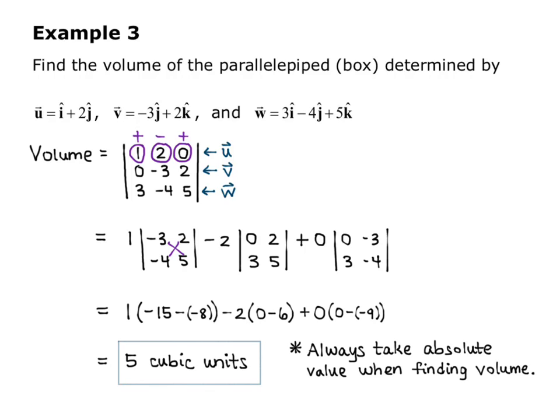To review: the magnitude of u cross v is the area of the parallelogram determined by u and v. The vector u cross v divided by the magnitude of u cross v is always a unit vector perpendicular to the plane determined by u and v. And the determinant of the 3×3 matrix with u, v, and w as the rows gives the volume of the box determined by the three vectors.